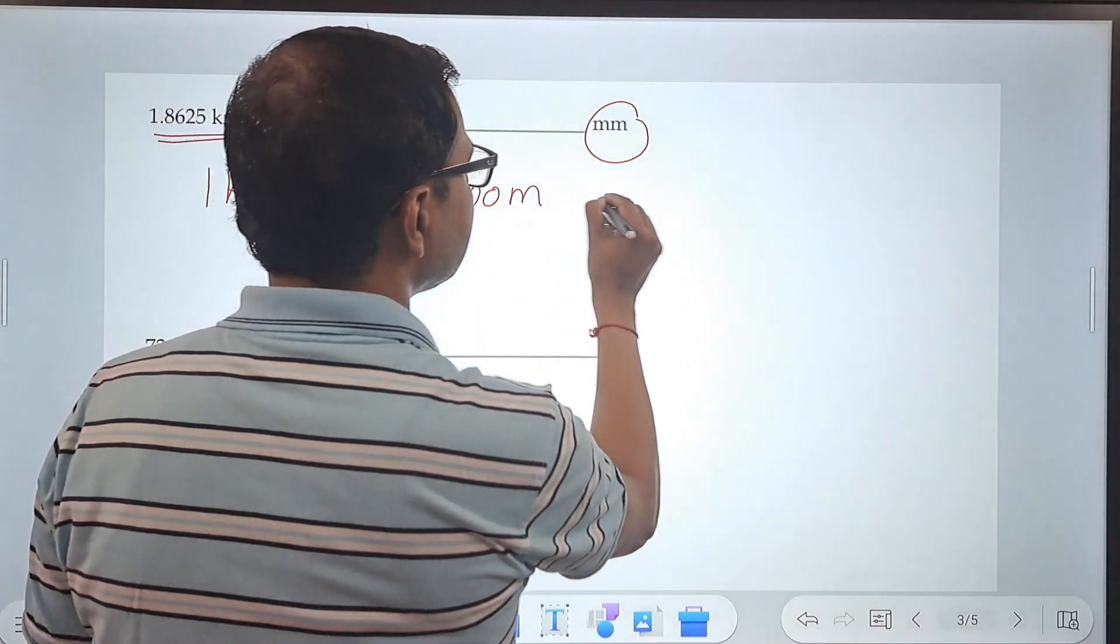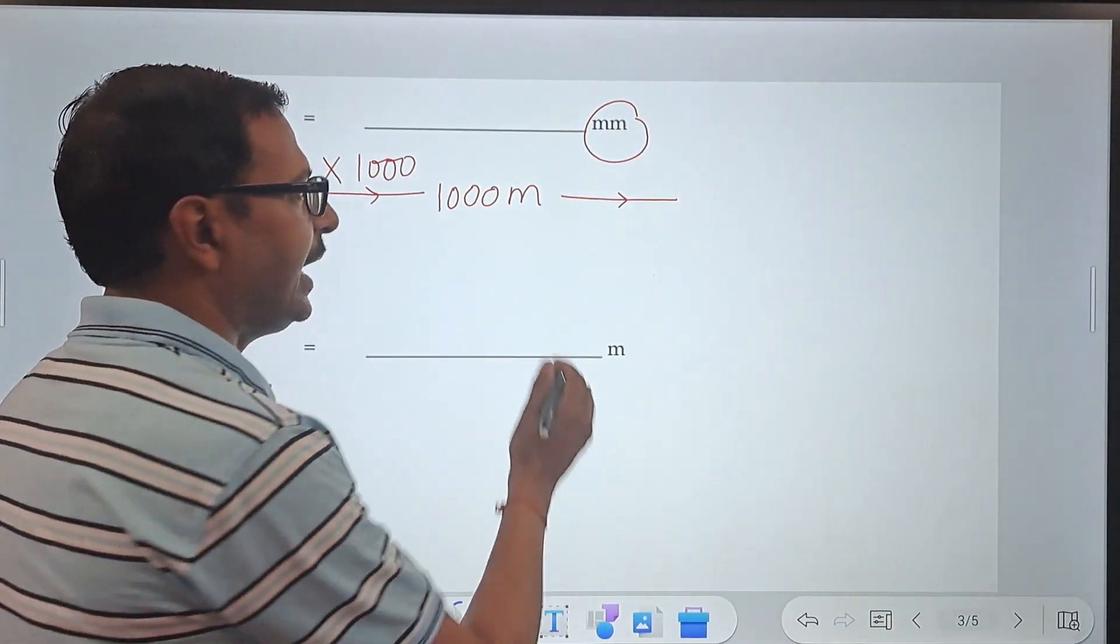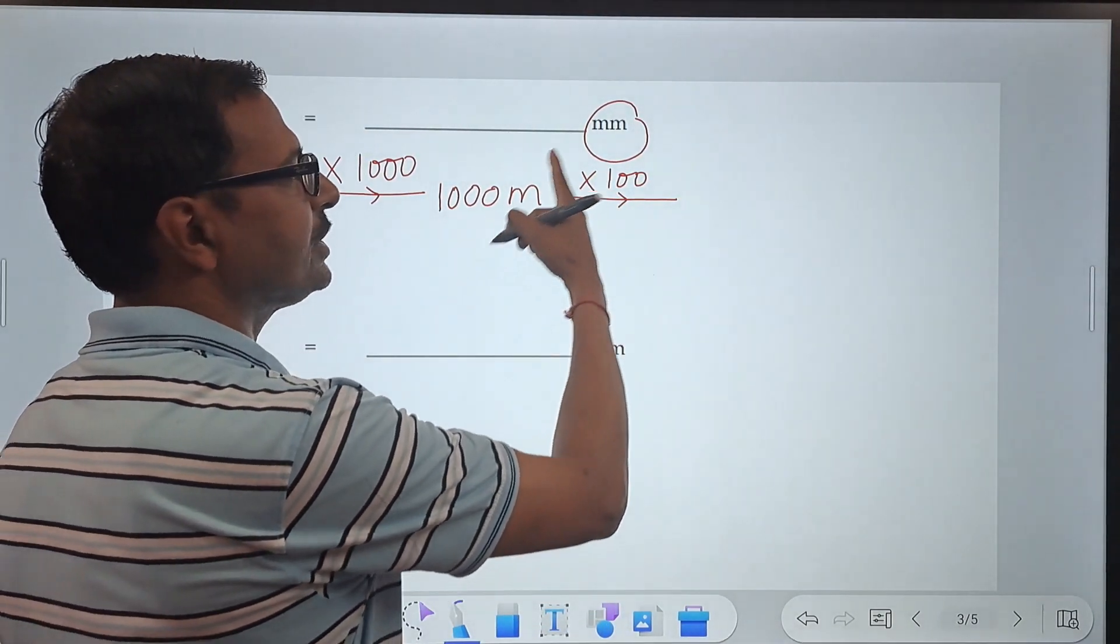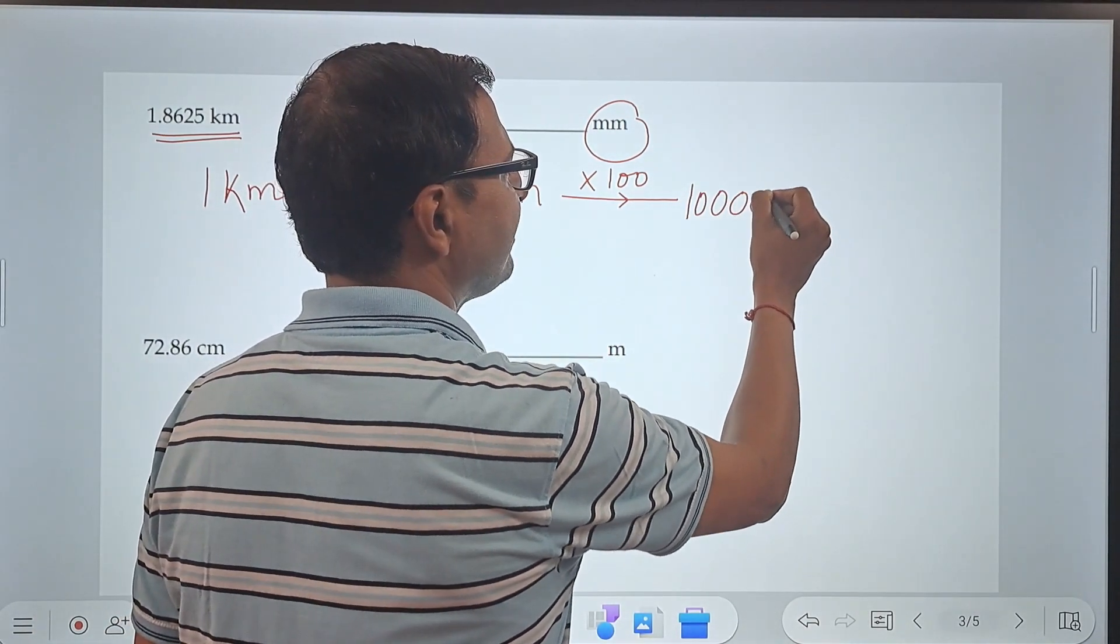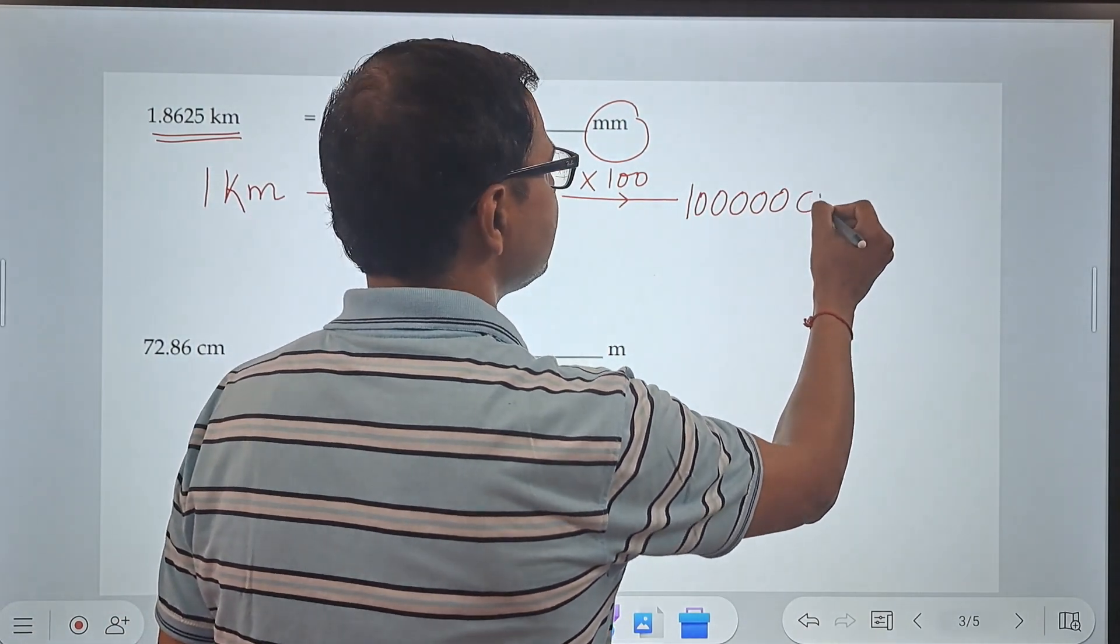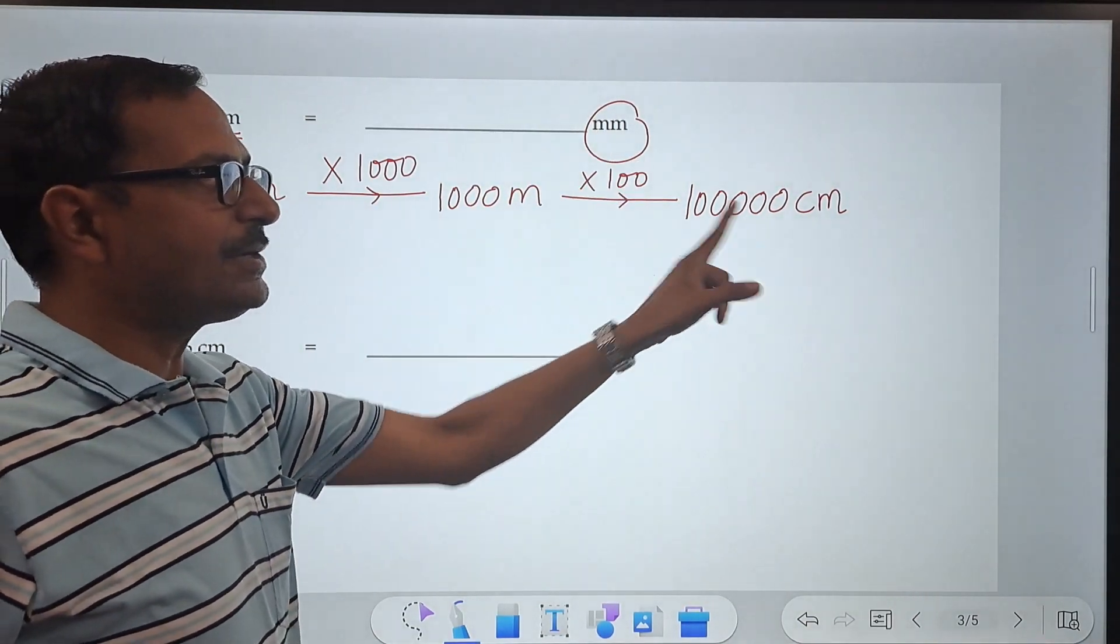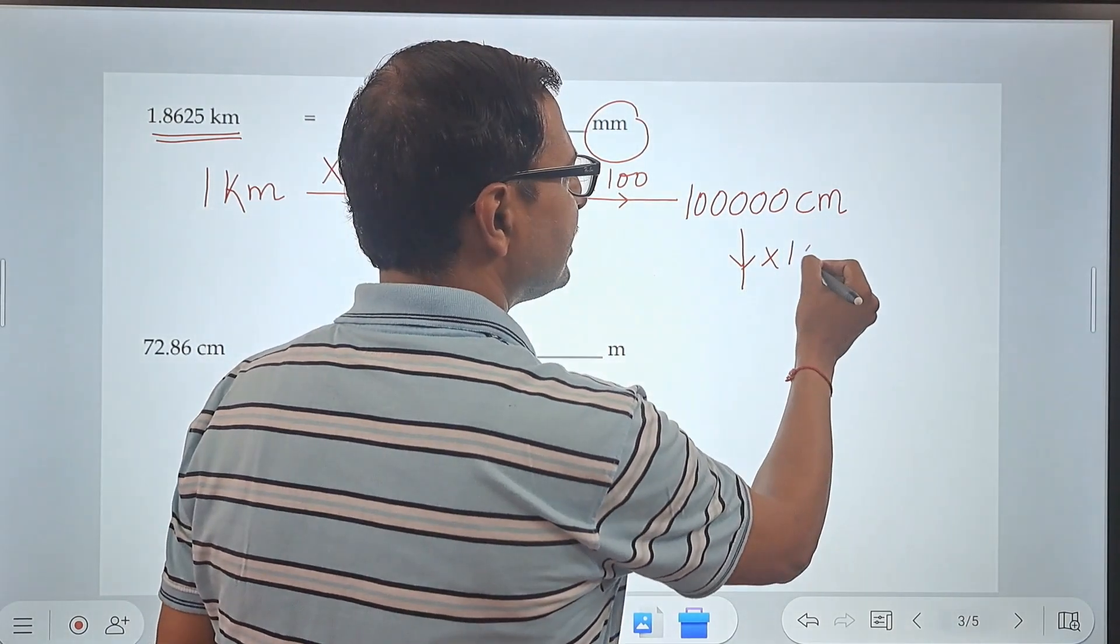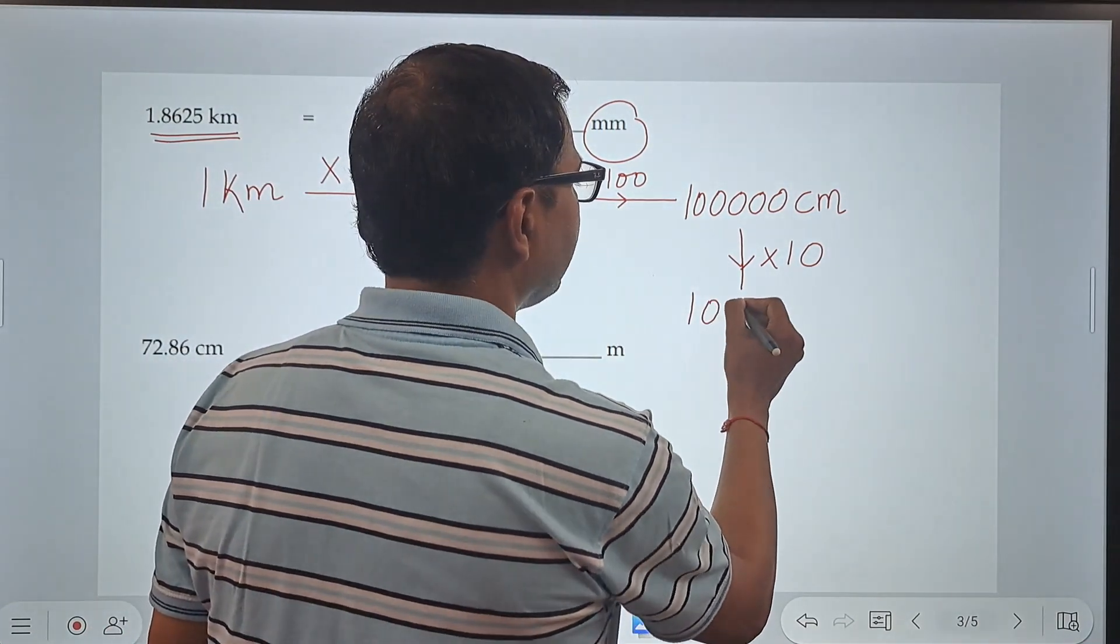Now that is the first conversion you should know. Meters can further be converted to centimeters. 1 meter has 100 centimeters, so multiply that by 100, and you get 1000 times 100 which is 1 followed by 5 zeros—that many centimeters. And now finally we need millimeters. So you should know that when you multiply centimeters by 10 you get millimeters, and therefore 1 followed by 6 zeros will be the millimeter conversion of 1 kilometer.